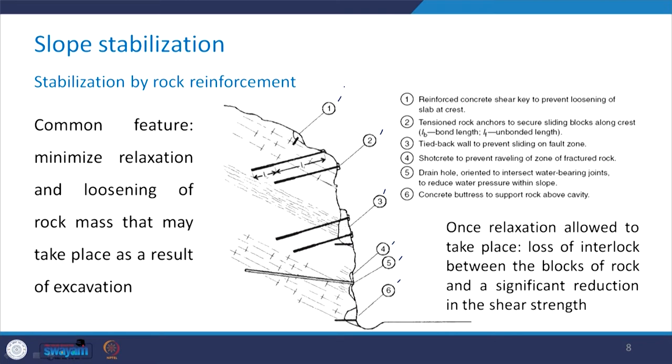The common feature of all these reinforcement measures is to minimize the relaxation and loosening of the rock mass that may take place as a result of excavation. Once relaxation is allowed to occur, there is a loss of interlock between blocks of rock, leading to a significant reduction in shear strength. To minimize this relaxation and loosening, we can adopt any of these stabilization techniques using different types of reinforcement.